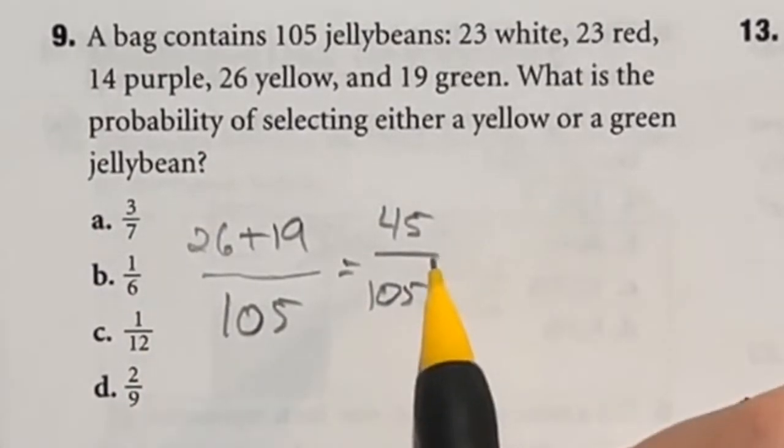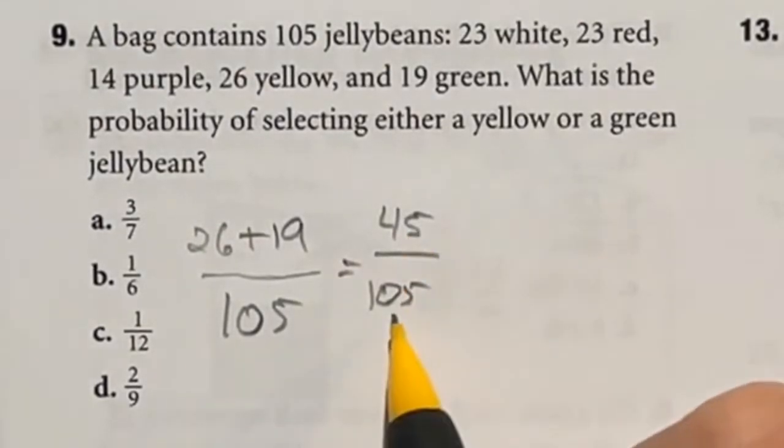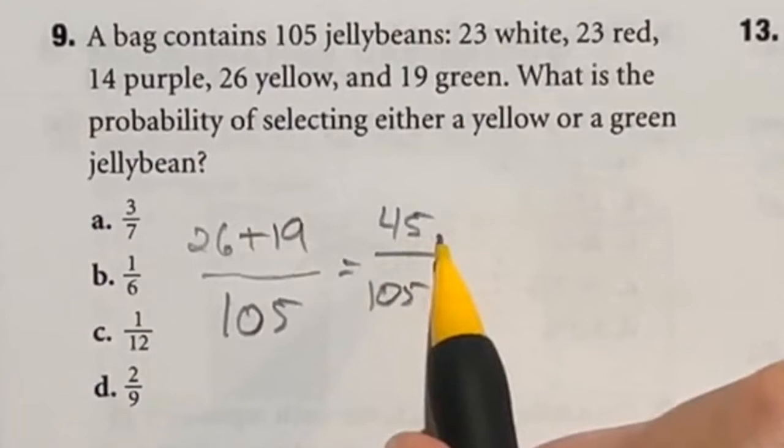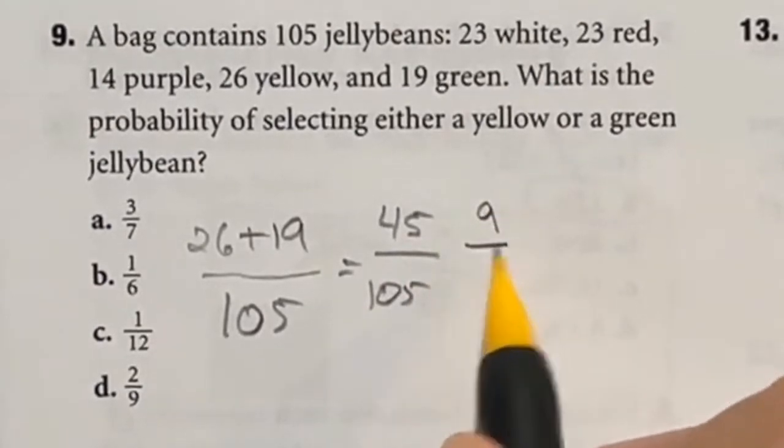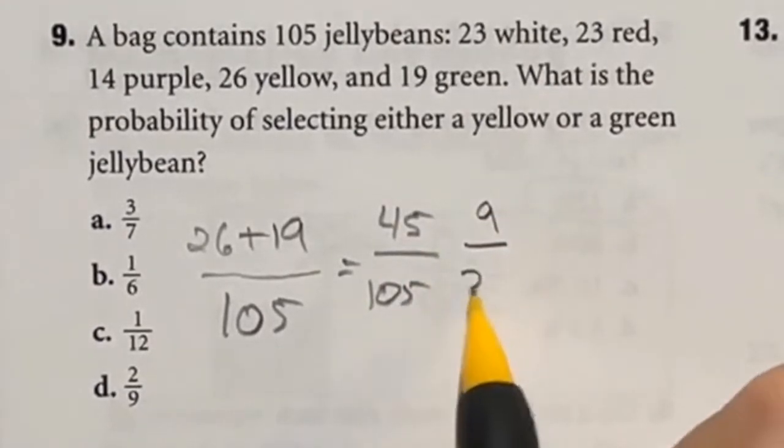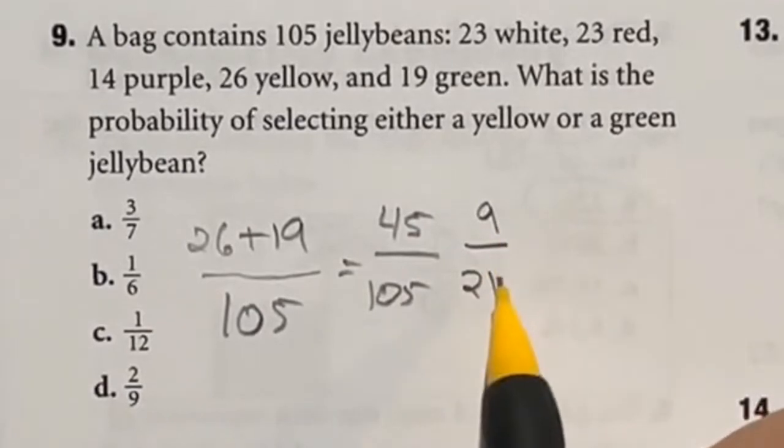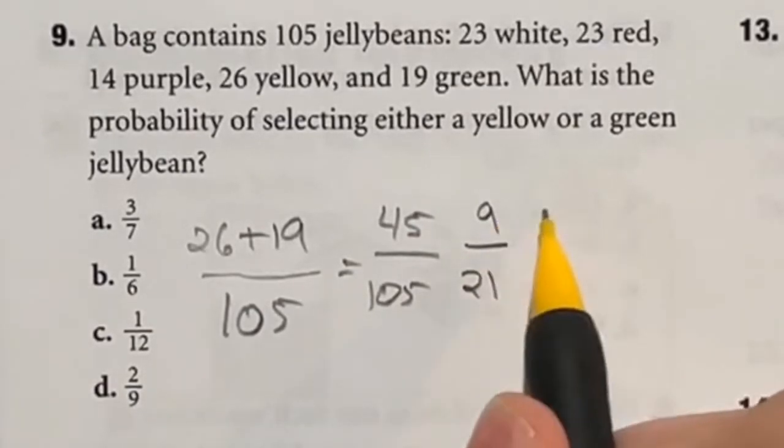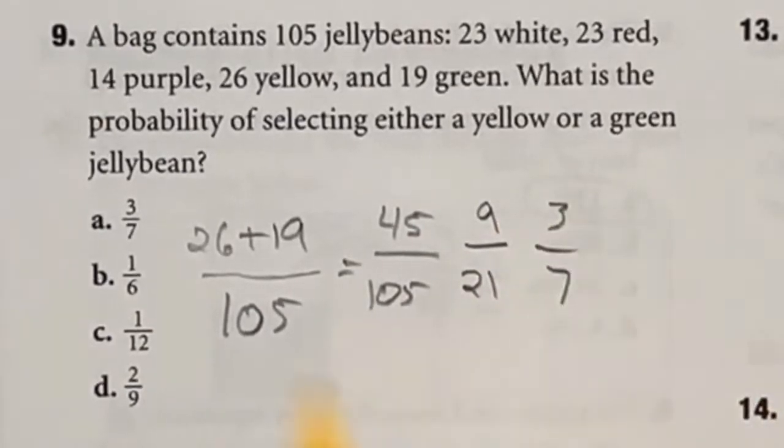Because we're doing this in the head, I'm going to do it in two steps, just so you can see the easy divisions here. If I divide both the top and bottom by 5, 45 divided by 5 is 9, and 105 divided by 5 is 21. In this case, I can see they're both divisible by 3. So 9 divided by 3 is 3, 21 divided by 3 is 7. So our answer is A.